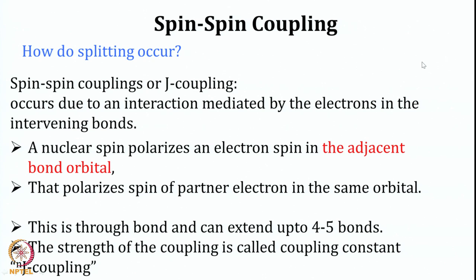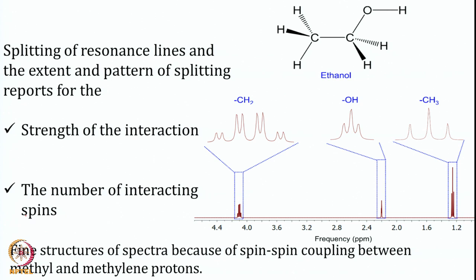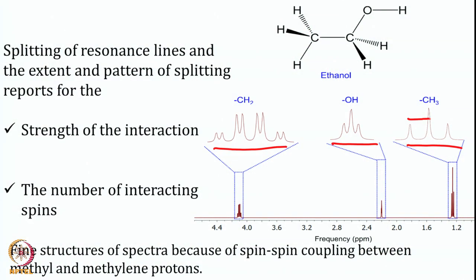What happens is that in the high resolution spectrum, the one line of methyl proton that we had looked at is not actually one line — it is split into three lines. In the case of methylene, it is also not one line and is split into many lines, and similarly OH also splits into many lines. The splitting of this resonance and the extent of this splitting reports the strength of interaction between various spins. This splitting pattern helps us identify the fine structure of a molecule, because the spin-spin coupling between the methyl and methylene protons tells us the neighboring group effect. This is due to J coupling or spin-spin coupling or scalar coupling.